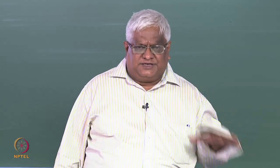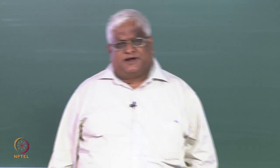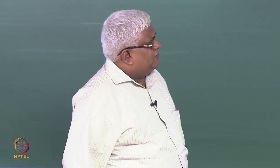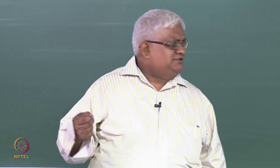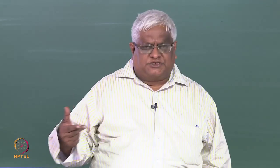It is a scene from Kolkata. It is multispectral imagery — there are 4 bands. Band 1 corresponds to blue, band 2 corresponds to green, band 3 corresponds to red, and band 4 corresponds to infrared. The resolution is approximately 36.25 by 36.25 square meters for each pixel — that is, each pixel on average covers an area of approximately 36 by 36 square meters.